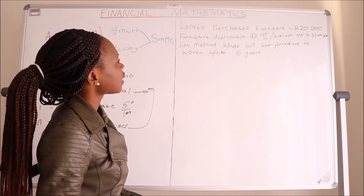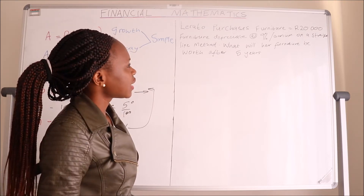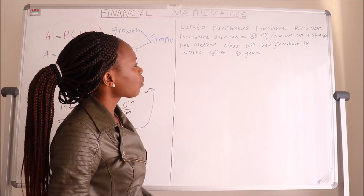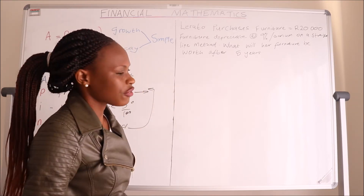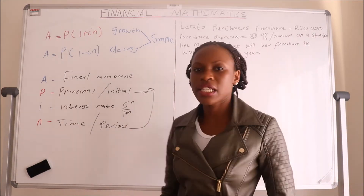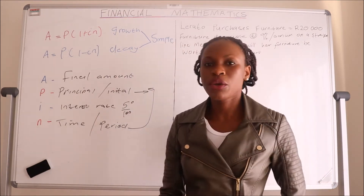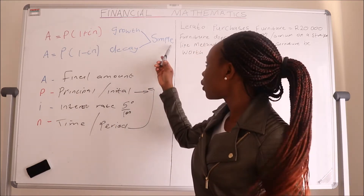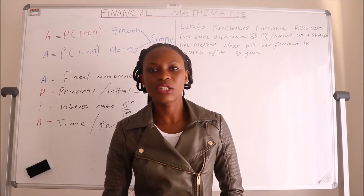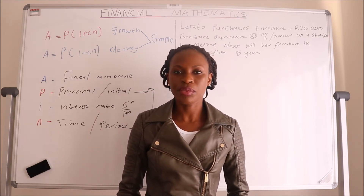Here we have a problem: Lerato purchases furniture which costs twenty thousand. The furniture depreciates at a rate of nine percent per annum on a straight line method. What will her furniture be worth after five years? Since the furniture depreciates over time, the equation we're going to use is simple decay, because the goods she has purchased will be depreciating in value, not appreciating.